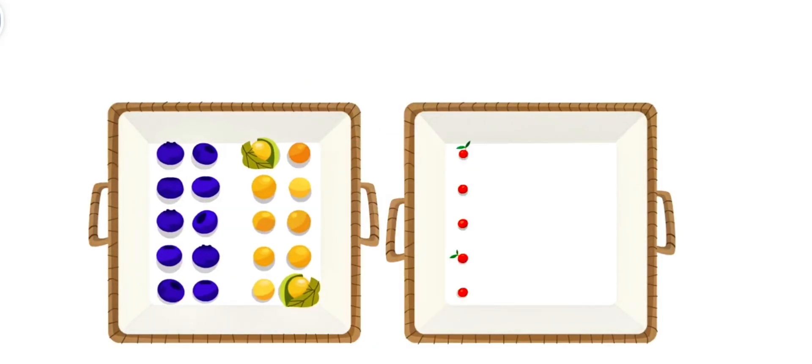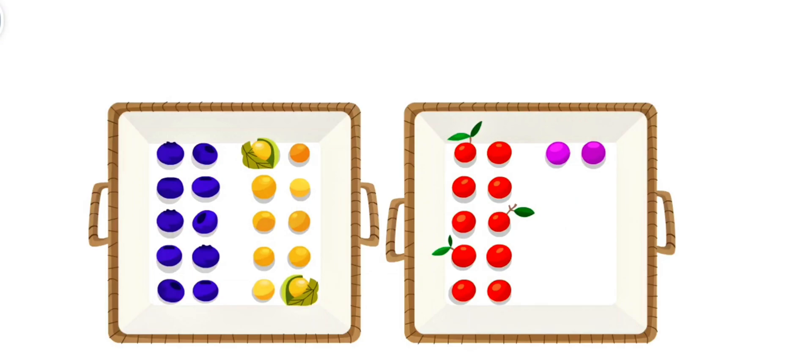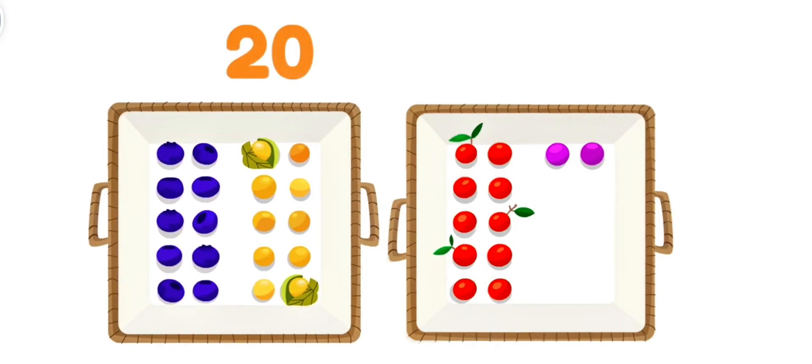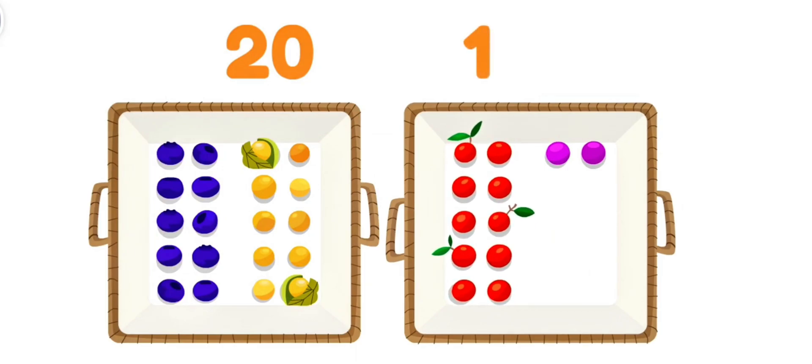I went berry picking and found lots of berries! This basket has two groups of ten! This basket has one group of ten and two singles! So this one has more! That means that twenty is greater than twelve! And twelve is less than twenty! This is the symbol we use to show greater than and less than! The mouth opens toward the bigger number! That's easy to remember! I want to eat the bigger basket of berries too!